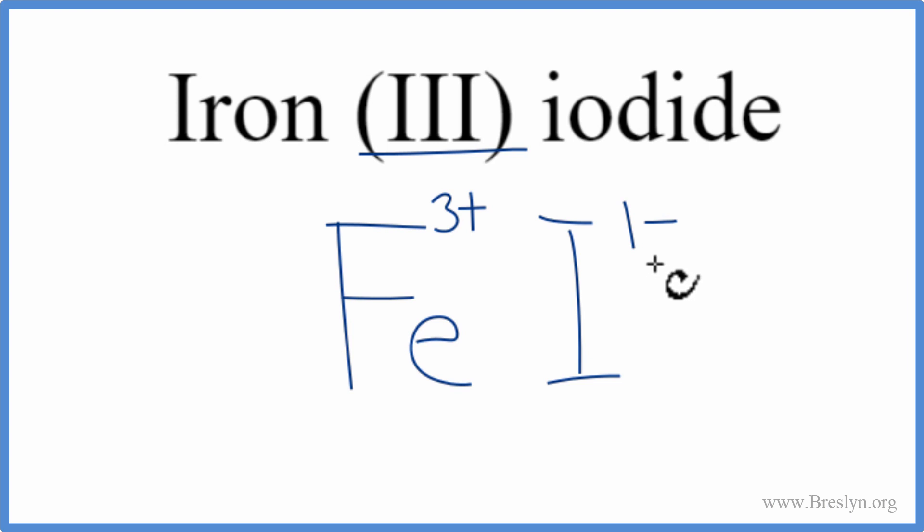So these charges, they don't add up to 0. So we need to change the subscripts to make that happen, to give us a net charge of 0. We can use something called the crisscross method to make that happen. We can move the 1 down here and the 3 over here. We don't write the 1 by convention. And we can get rid of these here.